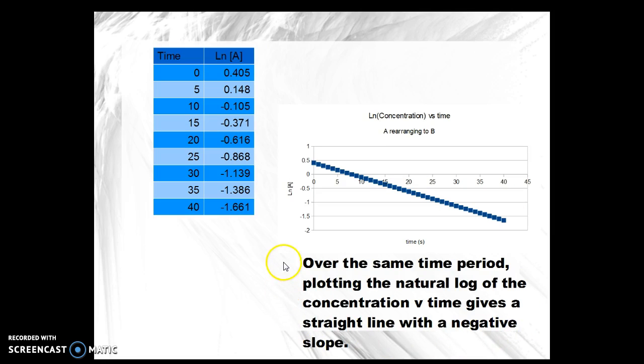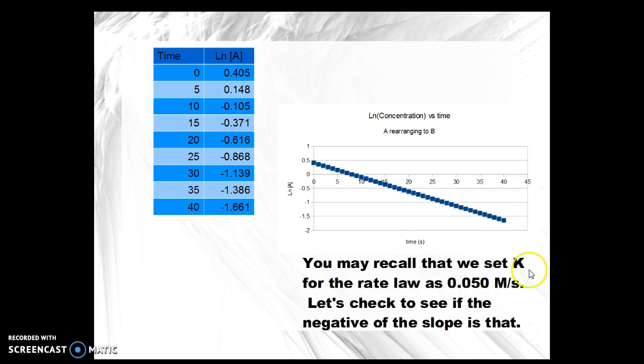If we then plot the natural log of A against time, you will get a straight line with a negative slope. You may recall that we set K in the rate law as 0.050 molar per second. Let's check to see if the negative of the slope is 0.050.